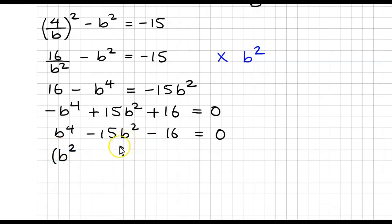So we have B squared and B squared are the factors of B to the 4. And then I'm looking for the factors of 16 that will give me, that will sum to give me 15.